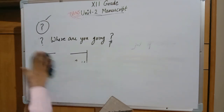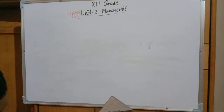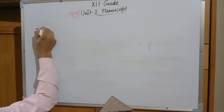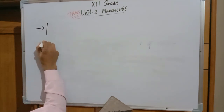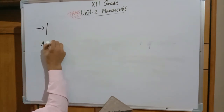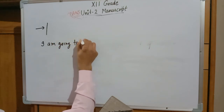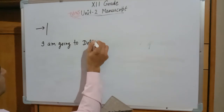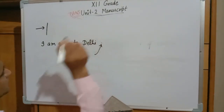The next sign is Justify, which is used to align content from both the left and right sides simultaneously — full justification. The next sign is Insert Full Stop. For example, if I write 'I am going to Delhi' but the full stop is missing at the end, it is an error. The Insert Full Stop sign indicates that a full stop must be added at that position.